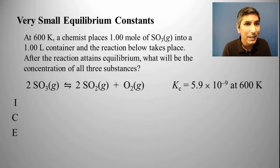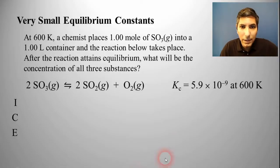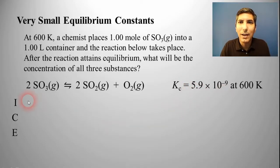Let's take a look at this problem here. At 600 kelvins, a chemist places 1.00 mole of sulfur trioxide gas into a 1.00 liter container, and the reaction below takes place. After the reaction attains equilibrium, what will be the concentration of all three substances? We have our balanced equation, and the equilibrium constant is given as well. Very small numbers we can see. I have an ICE box set up, which stands for Initial, Change, and Equilibrium.